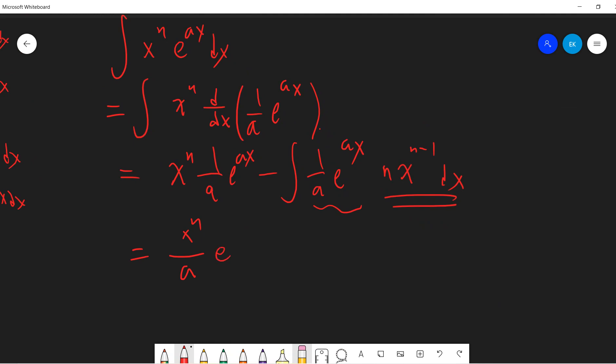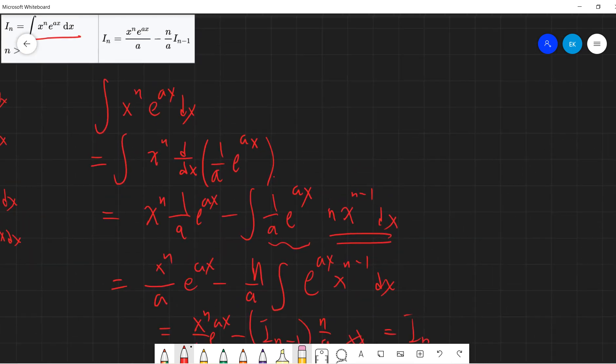This is x to power n exponential ax, one over a, n over a exponential ax, x to the minus... and x to minus 1 dx. So it's just this, which is I_n.